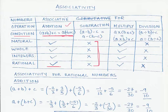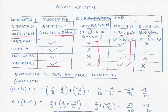For multiplication, this is straightforward. Associativity for multiplication is essentially an extension of the commutative property — it doesn't matter how you group two numbers to multiply first before multiplying with the third. So a × (b × c) gives the same result as (a × b) × c. Natural numbers, whole numbers, integers, and rational numbers all follow associativity under multiplication.